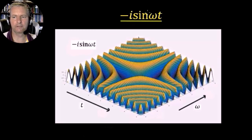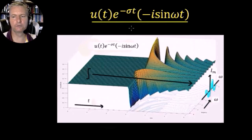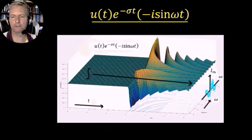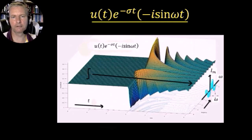Similarly, we have the minus i sin ωt surface, which we modulate with u(t) e^(−σt). This gives the surface u(t) e^(−σt)(−i sin ωt). It's the sine surface modulated so we only have positive-time values, and it tails off as t → ∞. Integrating with respect to time in this direction gives another function — the purely imaginary part, representing the imaginary part of one slice of the Laplace surface.